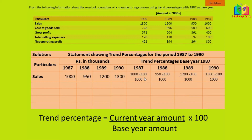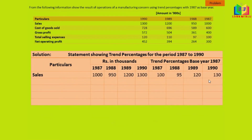I hope now you are clear to calculate these percentages. Current year amount divided by the base year amount — normally this base year will be given in the problem itself. If not, we have to take the earliest one. This gives us the percentages of trend.